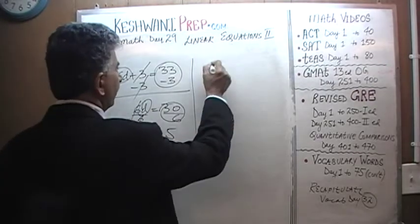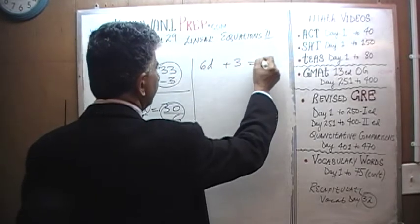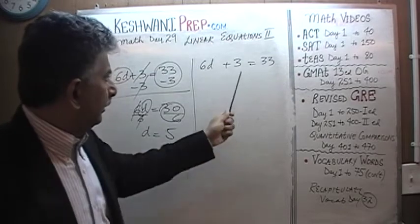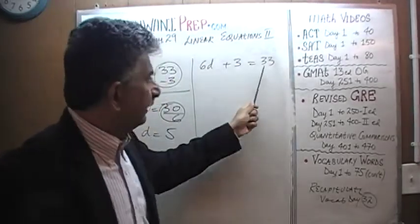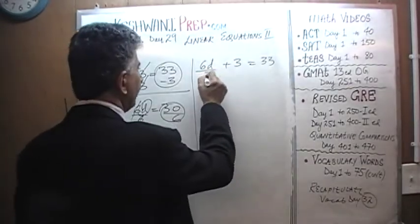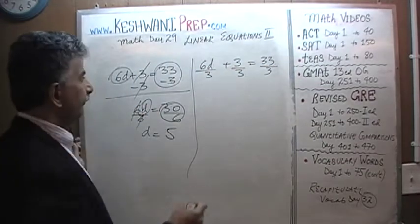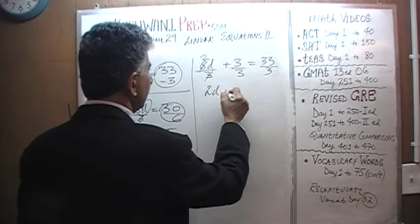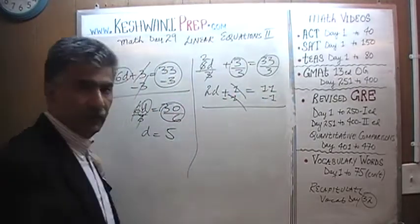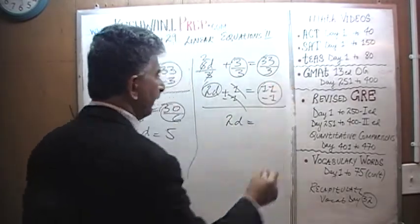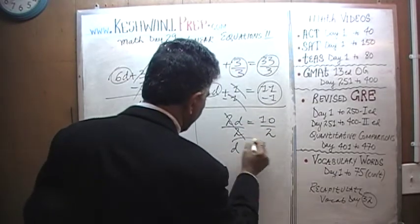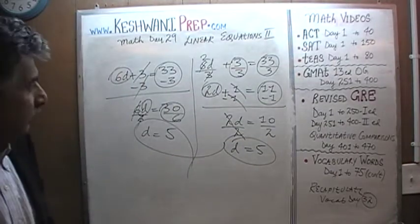What else could we have done with this equation? 6d plus 3 equals 33. We see a 6 which is a multiple of 3, a 3 which is a multiple of 3, and 33 which is a multiple of 3. We could have divided the entire equation by 3 right from the get-go. 6 divided by 3 is 2, so we get 2d plus 3 over 3, which is 1, equals 33 divided by 3, which is 11. Subtract 1 from both sides. 2d equals 11 minus 1 which is 10. Divide both sides by 2 and d equals 5 — just like we found before.